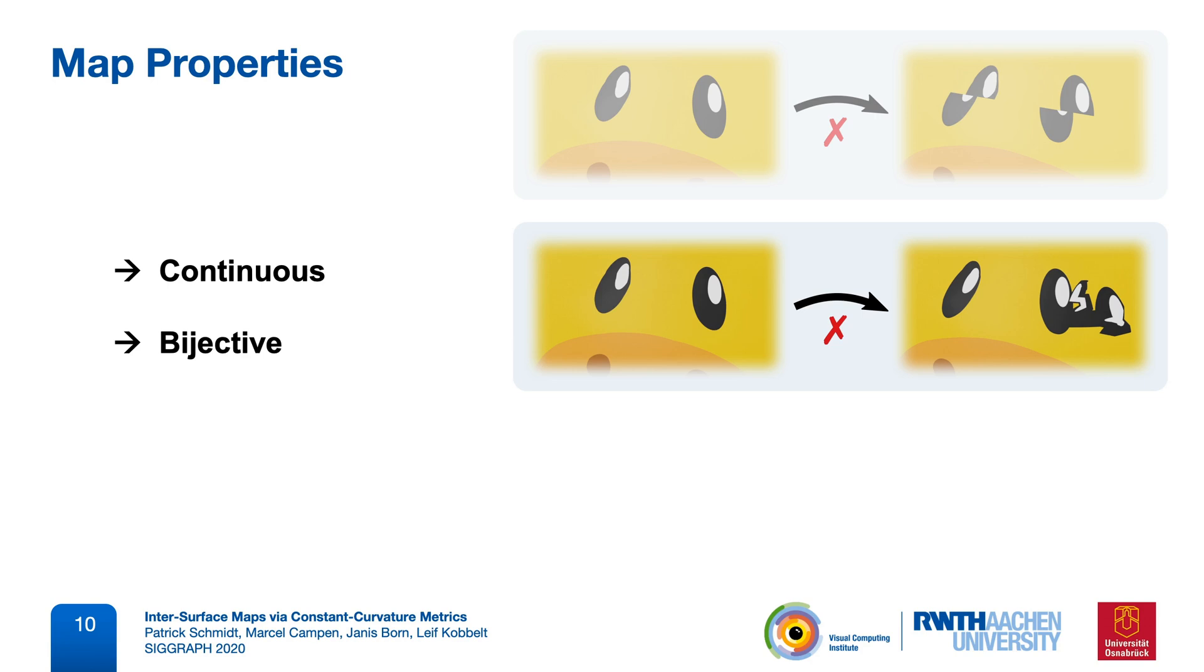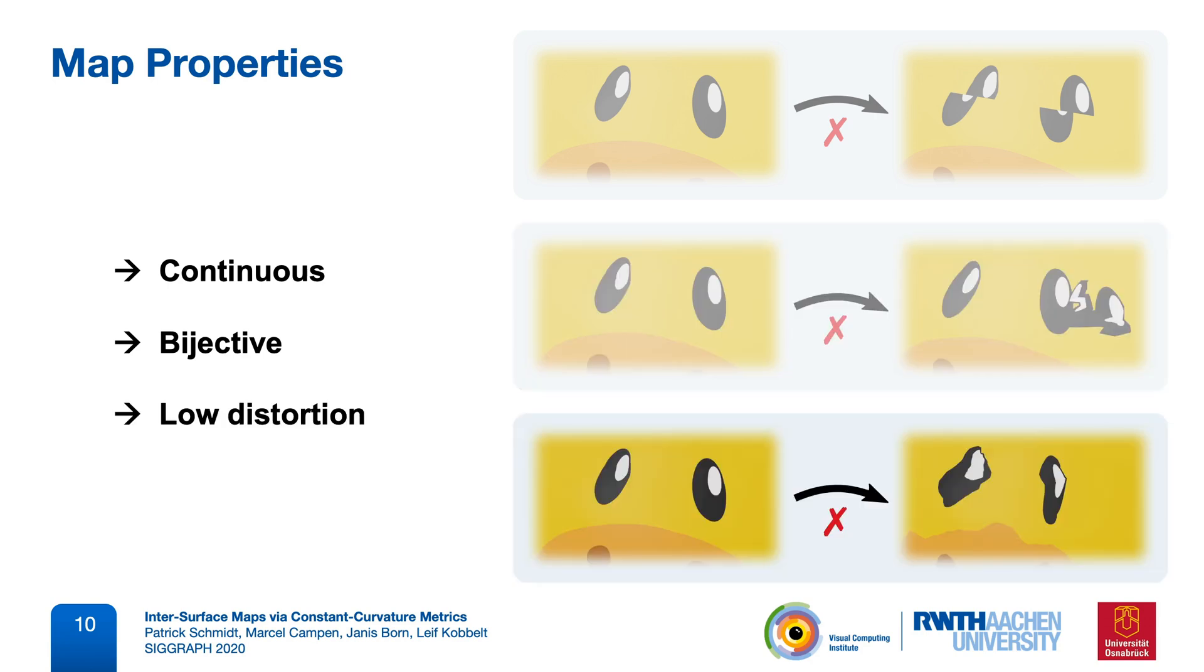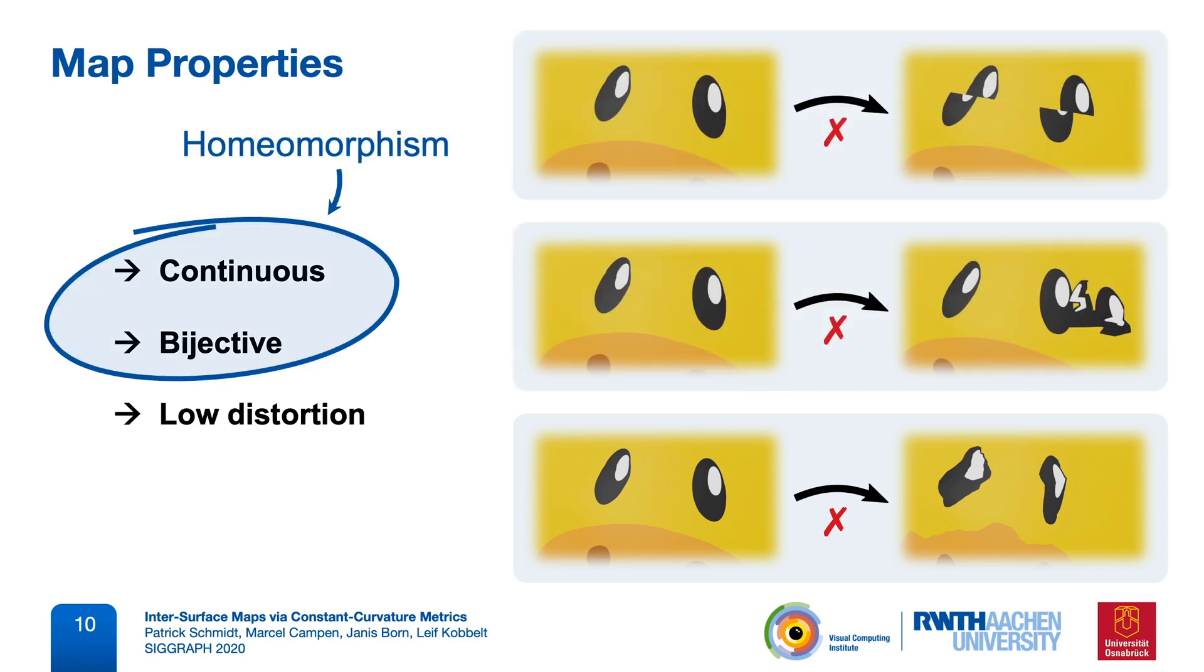We also want it to have low mapping distortion, so that it stretches only as much as it needs to, and only where it needs to. The first two criteria are binary, they are either fulfilled or not, and the class of maps that fulfills them is called surface homeomorphisms. To enable reliable processing pipelines, we are interested in this class of maps specifically.